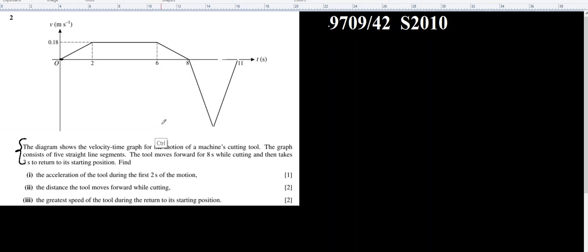Now let's start the question. The acceleration of the tool during the first two seconds of the motion - that's what we have to find first. So acceleration we know is the gradient of the VT graph.